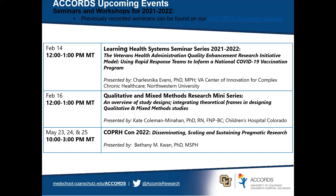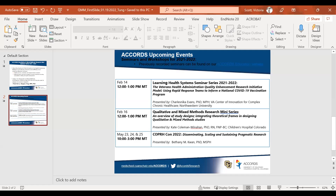We have Dr. Greg Tung with us. Dr. Greg Tung is an associate professor in the Colorado School of Public Health's Department of Health Systems Management and Policy. His research interests relate to how scientific evidence is incorporated into policy and program decision making, with a special emphasis on injury prevention.